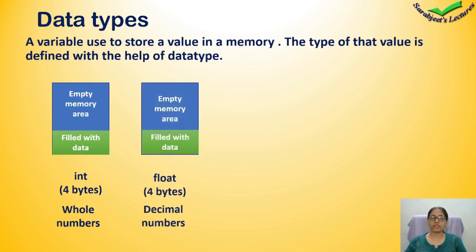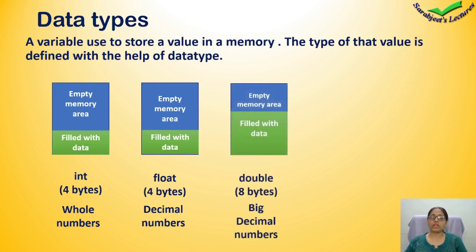The next data type is float. Float stores decimal numbers, and it also has a size of 4 bytes. After float, we have double. Double also stores decimal numbers but with a bigger size — its capacity is 8 bytes, which is double that of float.